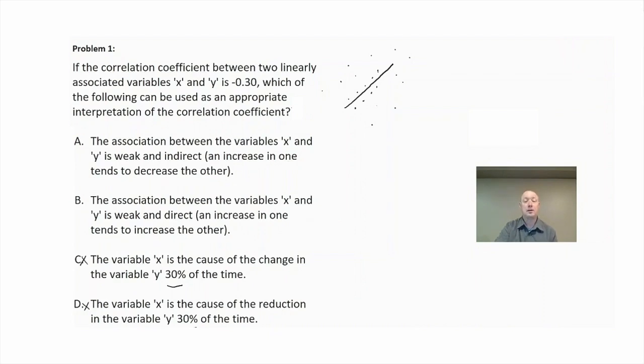The key difference between choices A and B is this correlation coefficient. We're talking a negative correlation coefficient, negative 0.30. Well, if it's negative, that means it is an indirect relationship. In other words, as the x gets bigger, the y gets smaller.